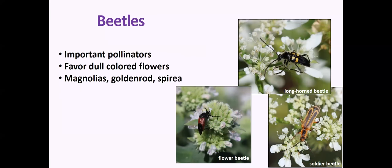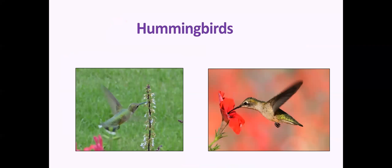Beetles can be important pollinators as well — soldier beetles, longhorn beetles, and flower beetles are all important. And then hummingbirds: not an insect pollinator, but one that really has the eye of the public. Even better than having a hummingbird feeder is having the plants available for hummingbirds to use, providing those natural resources for them.